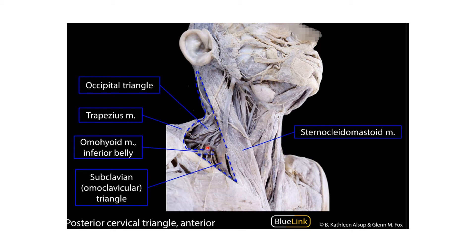We have already seen the transverse cervical vein, and beneath this we also have the third part of the subclavian artery, which is a content of the supraclavicular triangle. That is why the supraclavicular triangle is also known as the subclavian triangle, because the subclavian artery and vein are present in this triangle.